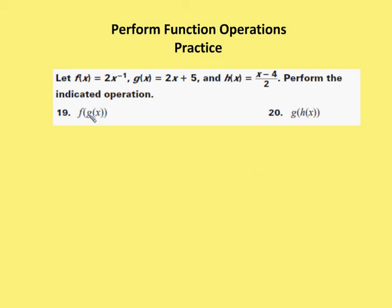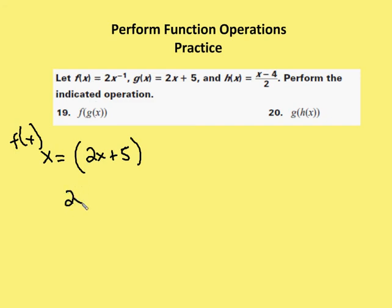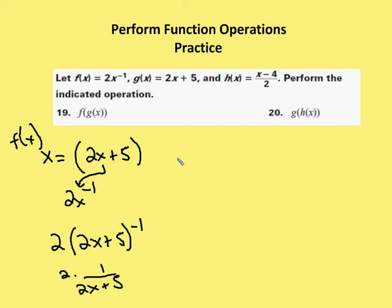Now I'm incorporating a function within a function. I have f of g of x. Whereas in the prior example I was substituting in a value for x, now I'm going to substitute the entire function in for x in f of x. I take g of x first, which is 2x plus 5, and substitute this entire value in — we say this is equal to x in f of x. f of x is equal to 2x to the negative 1. I substitute it in: I get 2 times, open parenthesis, 2x plus 5, close parenthesis, to the negative 1. Order of operations says I handle the exponents first, so this becomes 2 times 1 over 2x plus 5, which leaves me with 2 over 2x plus 5.